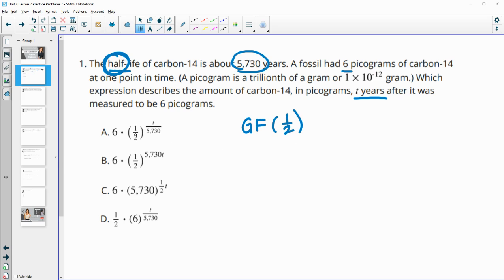What you need to recognize is we're talking half-life, so our growth factor is going to be one-half. When we look at these, C and D we can rule out right away because they're not using a growth factor of a half. The six is our initial value, which both A and B have.